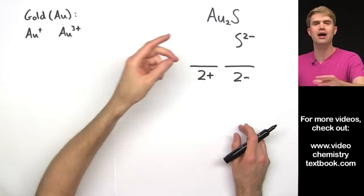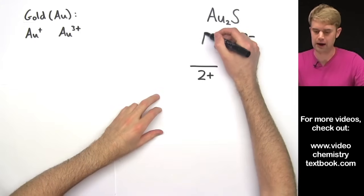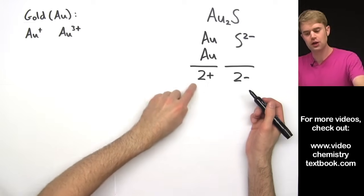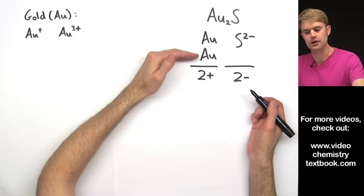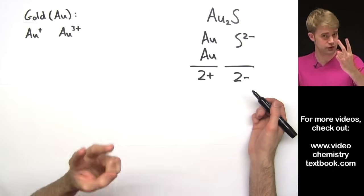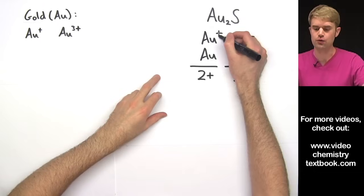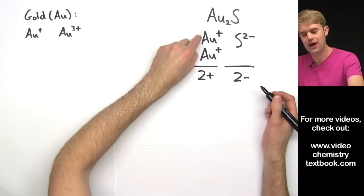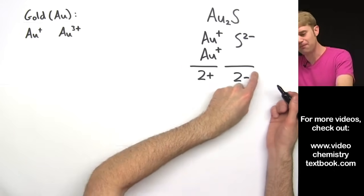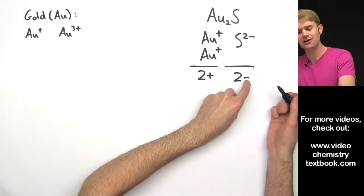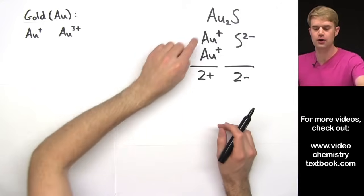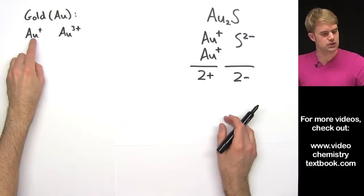Now, what's the charge on gold on Au? Well, this 2 tells us that we have 2 gold ions in the compound. Here's one. Here's the other. And this 2+ is distributed between these 2 ions. So that means that each one, since we have 2 of them, is going to be Au1+. So now we have 2 Au1 pluses, give us 2+ of total positive charge, balanced out by 2- of negative charge from our S2-.